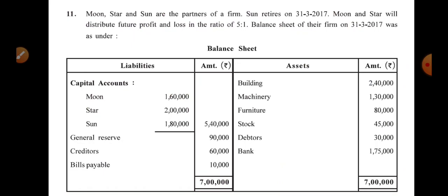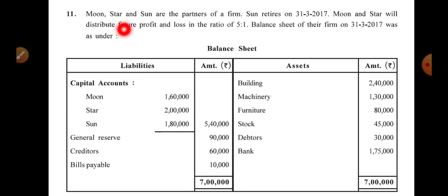The headline is — read with me, open your book, Chapter Number 6, Sum Number 11, and read it with me and do tick marks accordingly. Moon, Star, and Sun are the partners of a firm. Sun retires on 31st March 2017. Moon and Star will distribute future profit and loss in the ratio of 5:1.